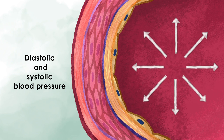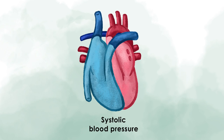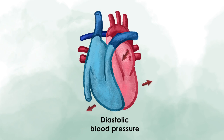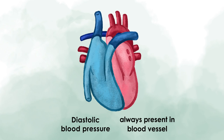There are two phases to your heart's pumping cycle. Systole is when your heart contracts, pushing the blood out of the chambers. Then there is diastole, the period between contractions when the muscle of your heart relaxes and the chambers fill with blood. The diastolic blood pressure is therefore the pressure that is always present in our blood vessels.